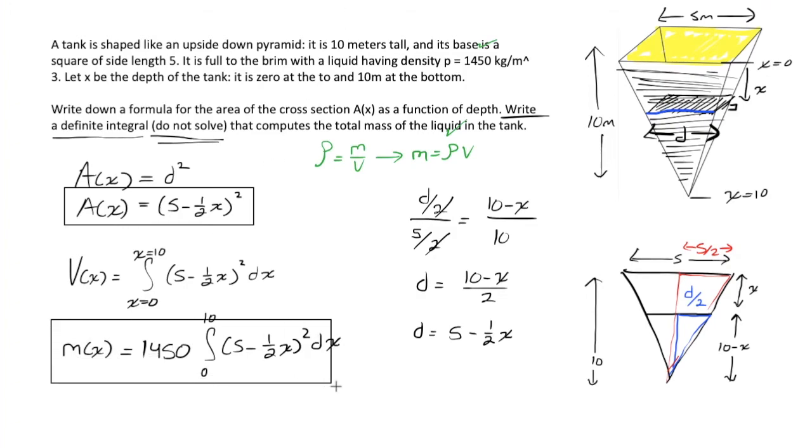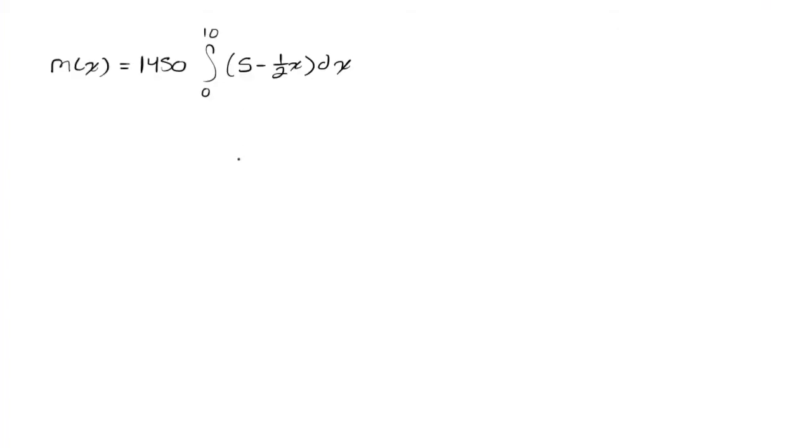That's not even too difficult an integral. This integral can be solved fairly easily with u substitution. If I choose to let u be equal to 5 minus 1 half x, then du dx will be 0 minus 1 half and du will be negative 1 half dx and dx will be negative 2 du. The substitution worked perfectly.